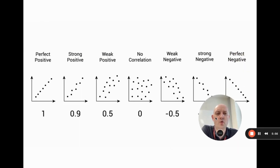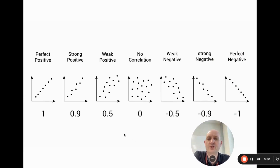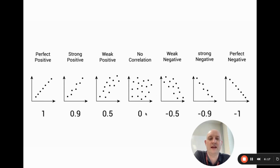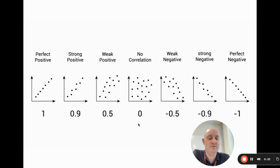We can now look at all possible correlations. On the left we have perfect positive, where data points fall exactly on the line of best fit, giving a linear function. Then strong positive and weak positive as described. Then no correlation, where numbers are random and there's no positive or negative connection between variables. Then weak negative, strong negative, and finally perfect negative, which again would be a linear function. To get the line of best fit you can draw it by hand, use Microsoft Excel or Google Sheets as I did, or use mathematical modeling, which is beyond the scope of this video.